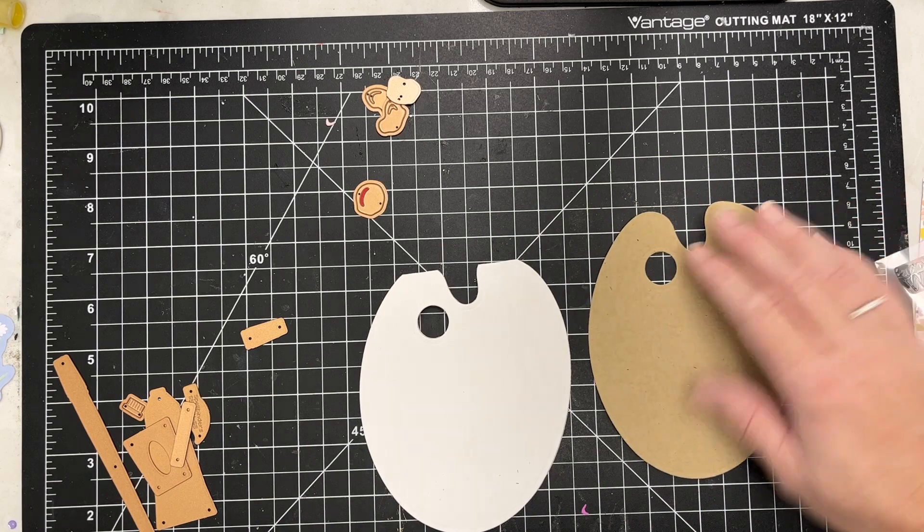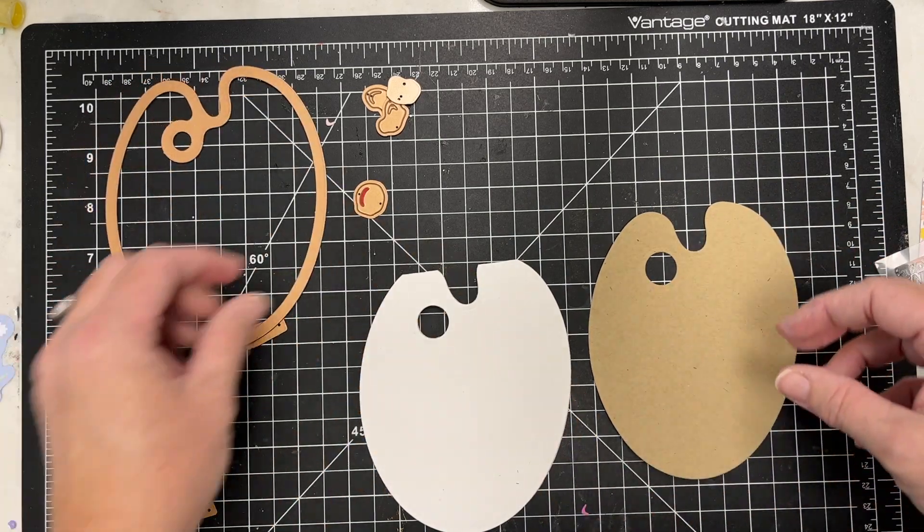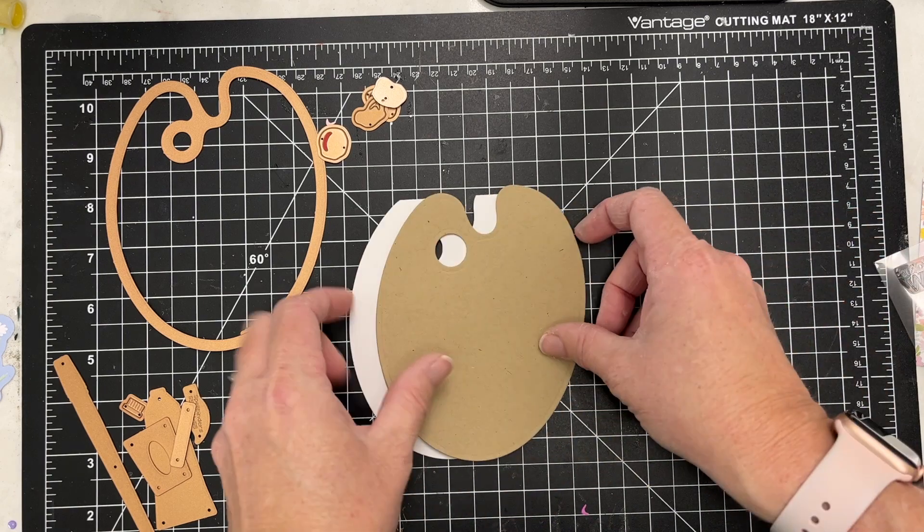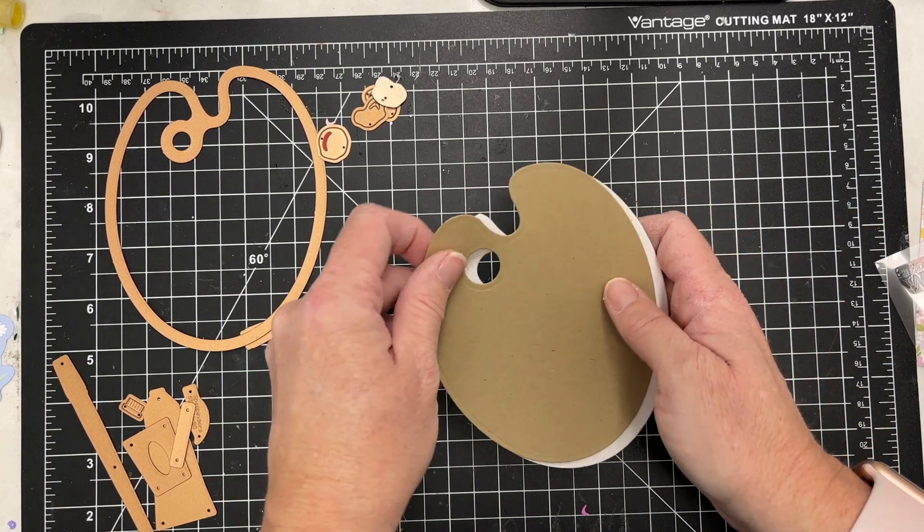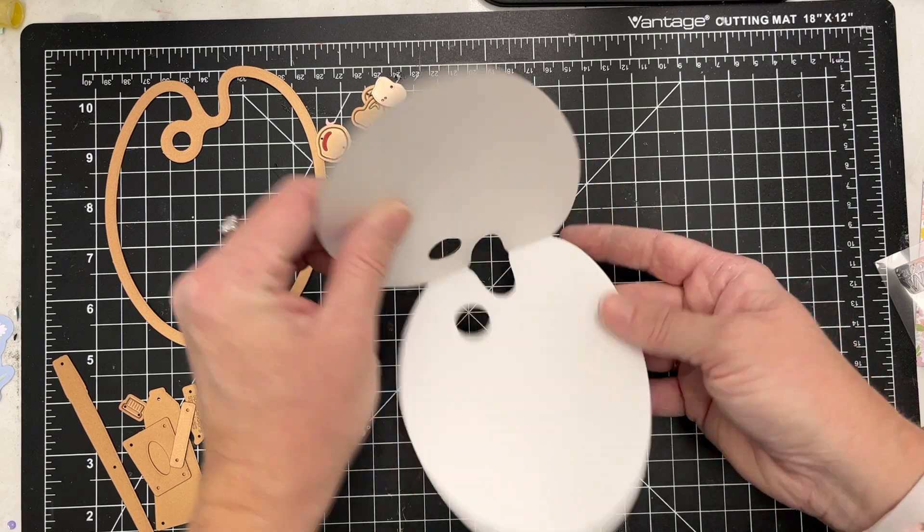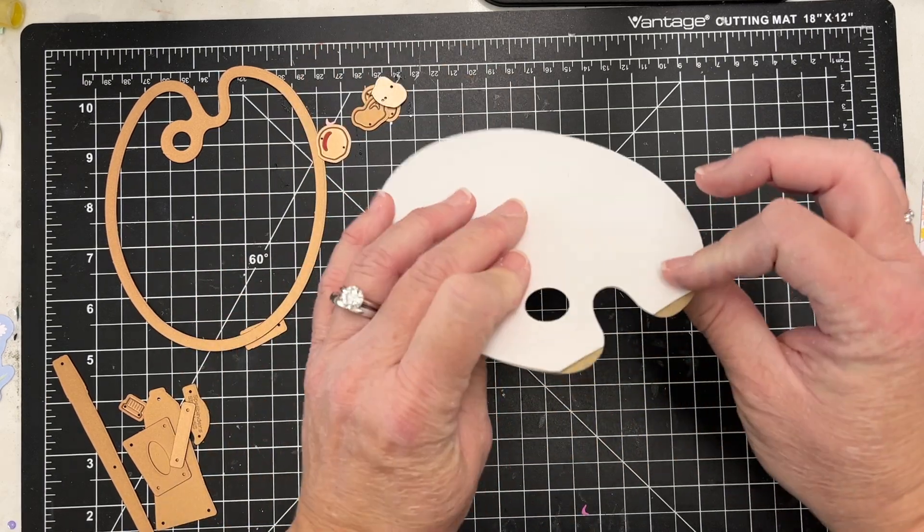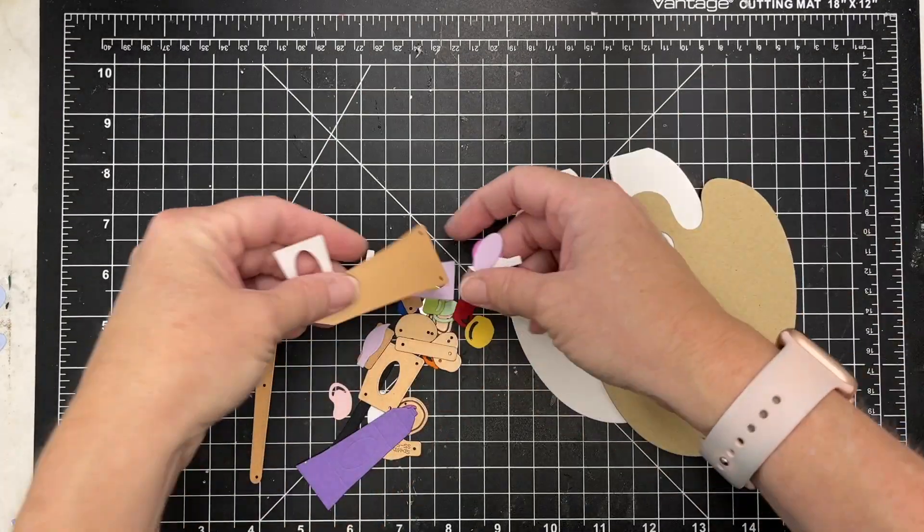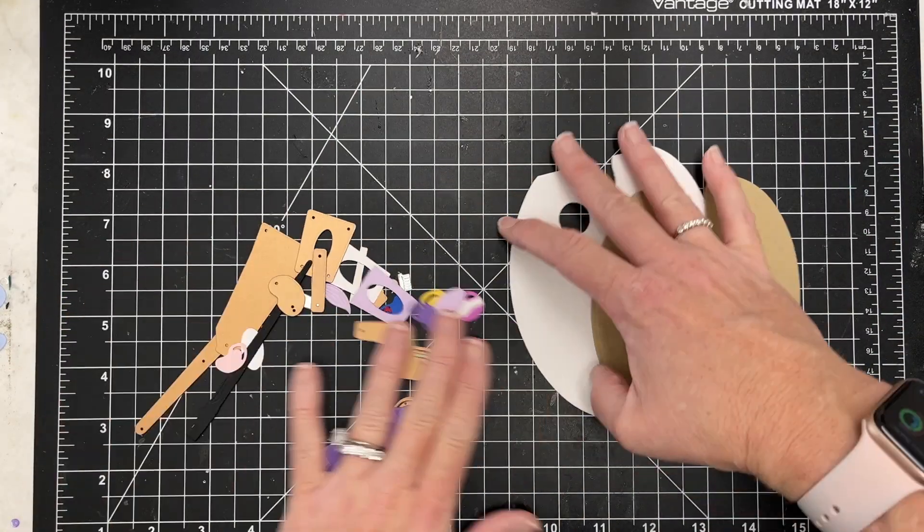I went ahead and cut a second piece of a kind of craft color cardstock that I'm going to use. I wanted to have a white card base underneath, so I'm just going to take my additional palette and glue that on top. So it just covers your little edge too if you don't like that. So that's just a workaround to make a smooth looking palette.